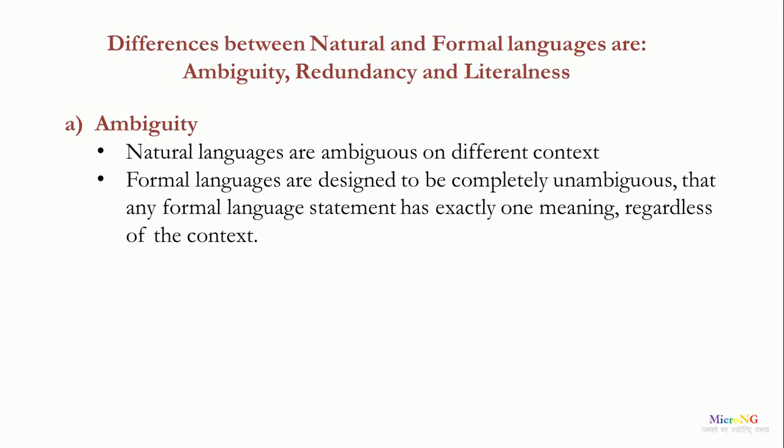The differences between natural and formal languages are ambiguity, redundancy, and literalness. The first one, ambiguity. Natural languages are ambiguous in different contexts. Formal languages are designed to be completely unambiguous, meaning any formal language statement has exactly one meaning regardless of the context.